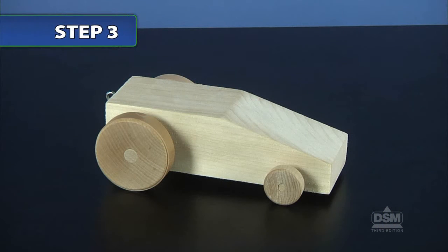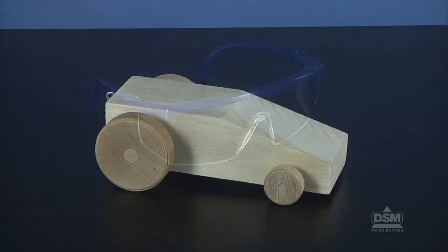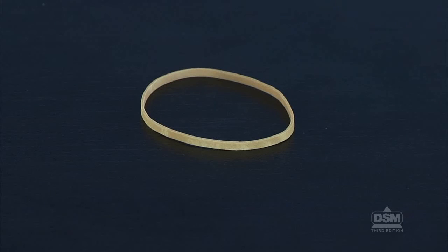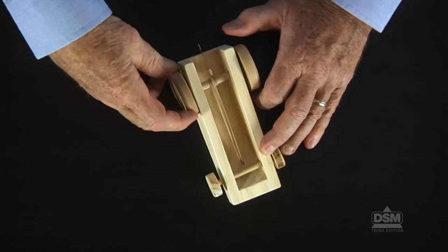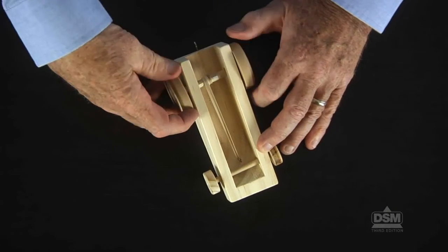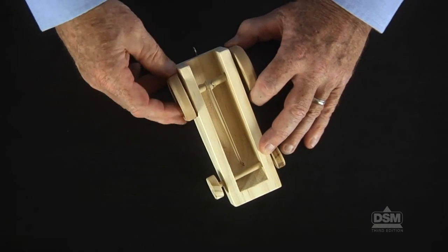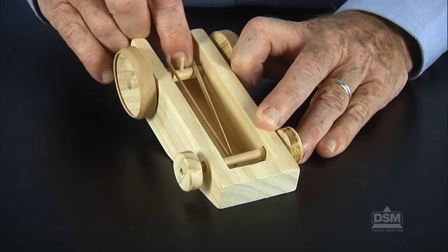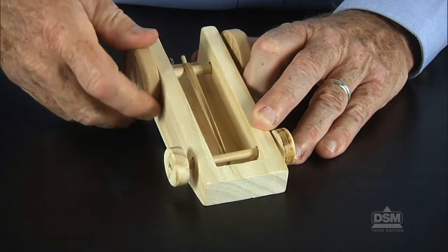Have the teams retrieve the tractors from Activity Five. Distribute a pair of safety goggles to each student and one long rubber band to each team. Remind the students how to wrap the rubber band around the axle to propel the tractor. Wearing safety goggles, attach the rubber band between the small screw eye and the peg on the large axle.